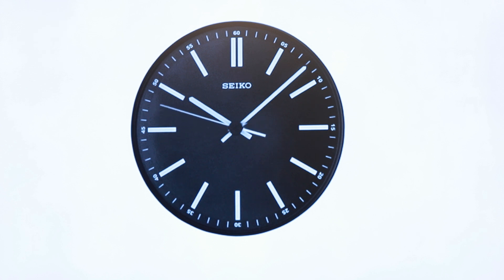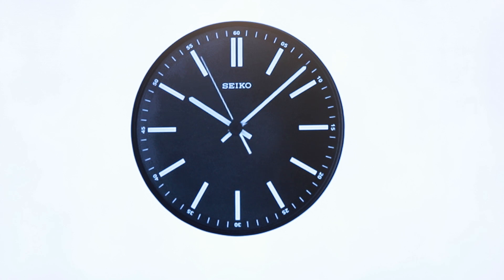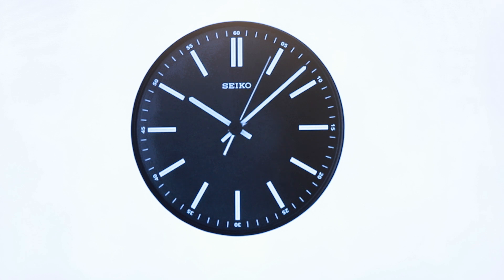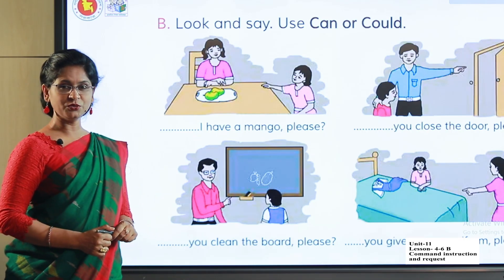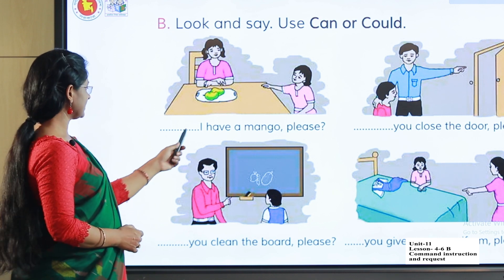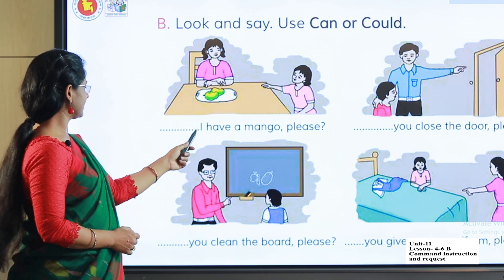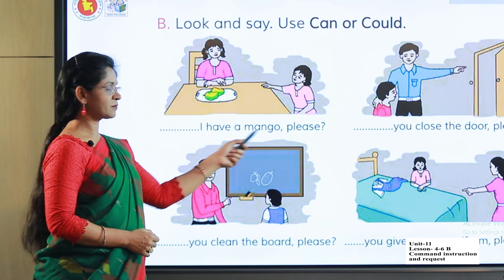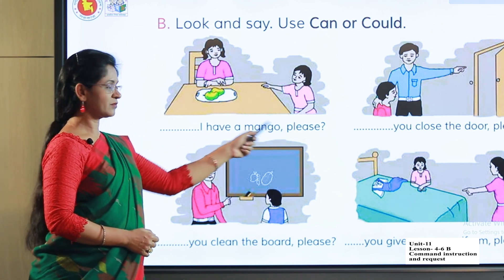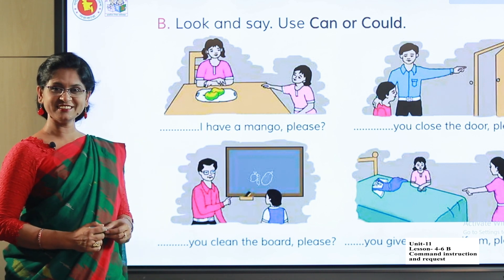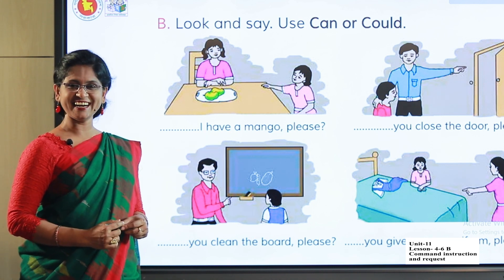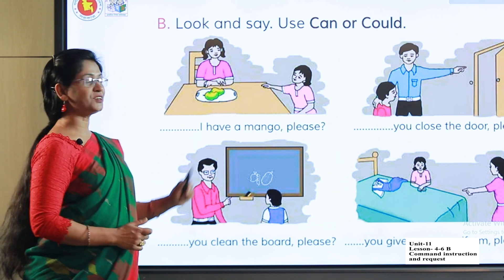So let's get started. Please look carefully at the sentences. Here the sentence: 'I have a mango, please.' What did I say? Yes, I said 'Could I.' So you have to put 'could' here.